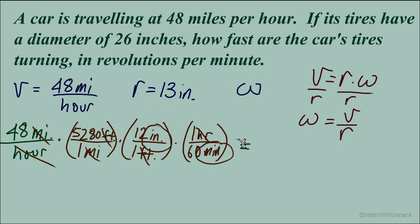Multiplying all the numerators together and then dividing by 60 leaves us with 50,688 inches per minute. That's the speed of this car.